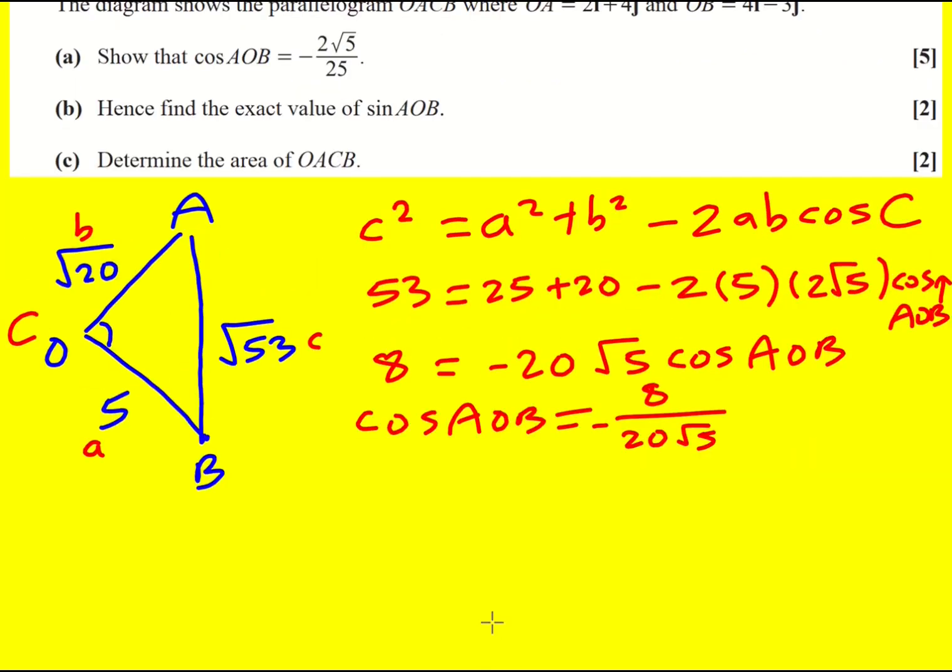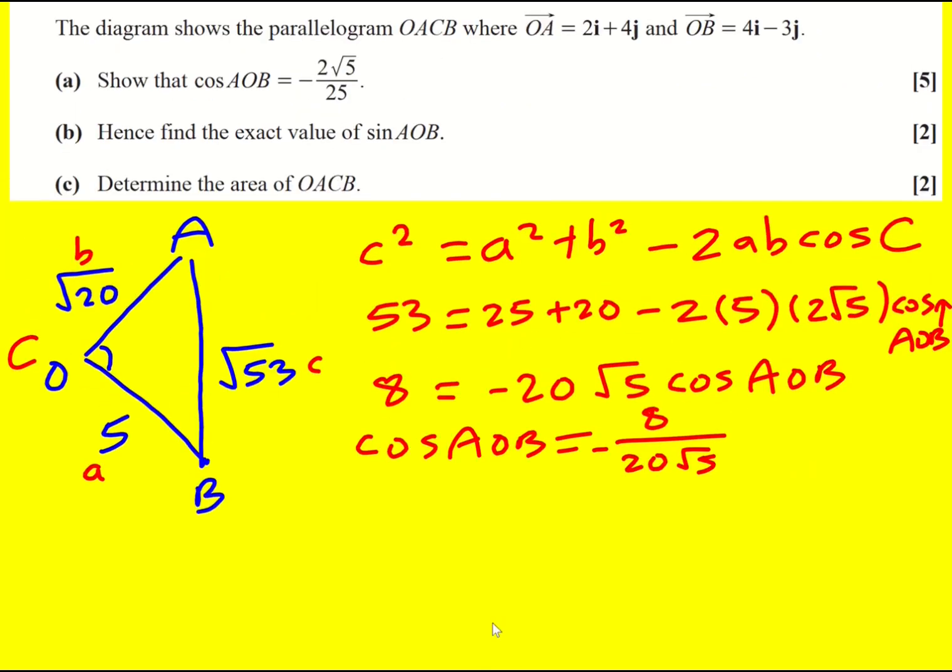I just need to cancel it down first of all, so actually 4 goes into both, so it's going to be minus, this is looking good, minus 2 over 5 root 5. And then in their answer they've actually rationalized the denominator, so I'm going to times the top by root 5 and times the bottom by root 5. I feel like I can just go there in one step, and we're there.